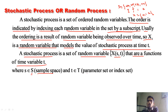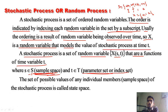And small t belongs to T, the parameter set or index set. So there are two sets: one is the time set and one is the sample space. The set of possible values of any individual member of the stochastic process is called the state space.